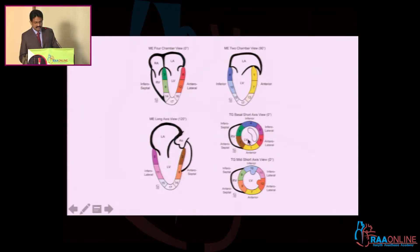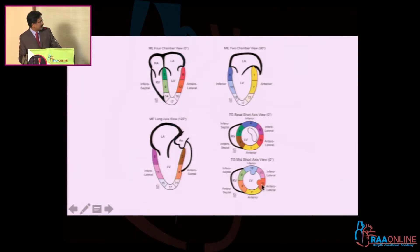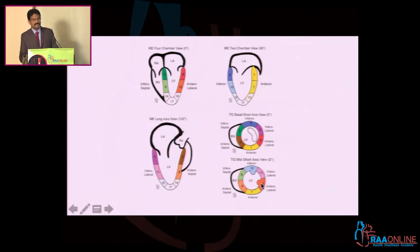The 17 segments are: these are the basal segments, and then you have the mid segments at the papillary level, below the apical segments. Basal we have 6 segments and mid we have another 6, apical 4 and apex is 1. So, 6 plus 6 is 12, plus 4 is 16, plus 1.